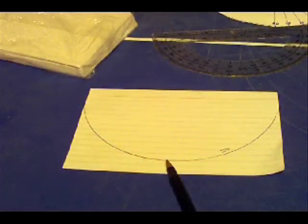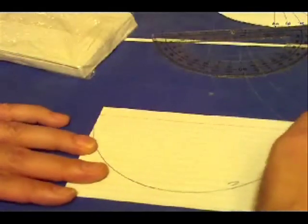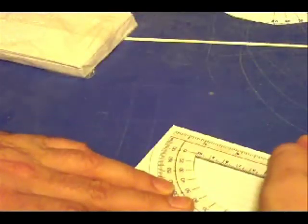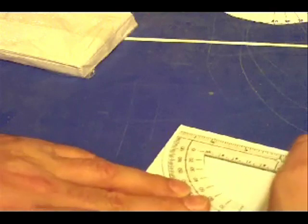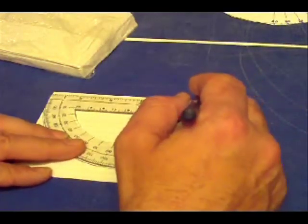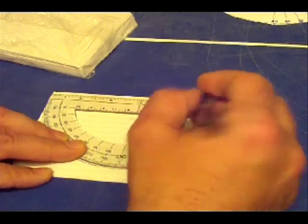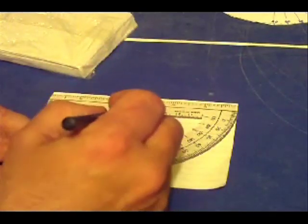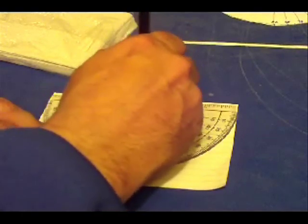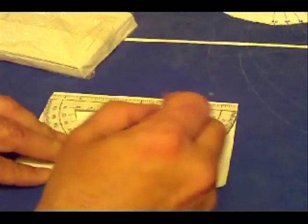After you have that curve drawn in there, I'm going to now try to find the center point of this thing so I can measure it. And that's pretty easy because I already have a little hole here at the crosshairs.